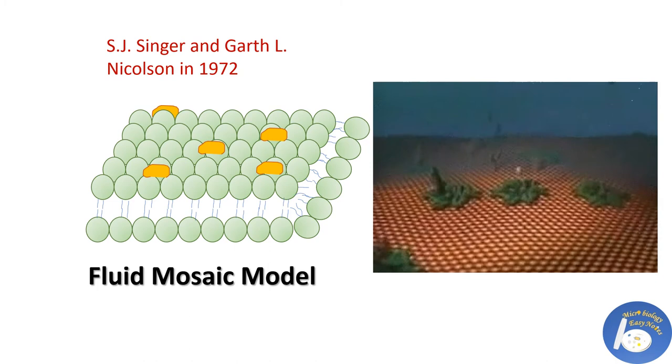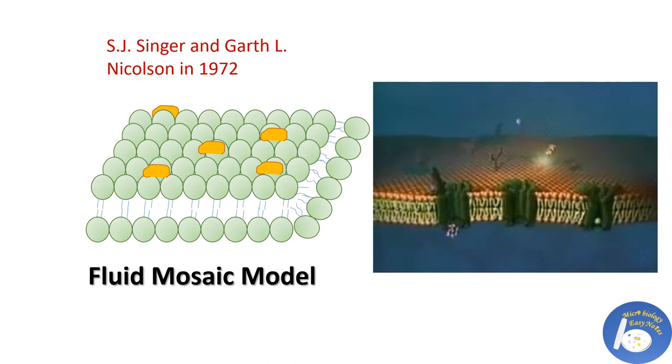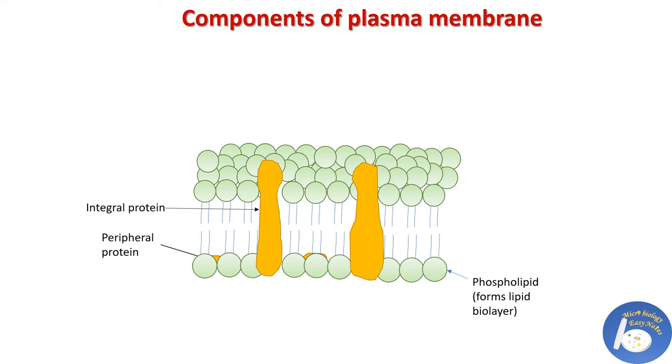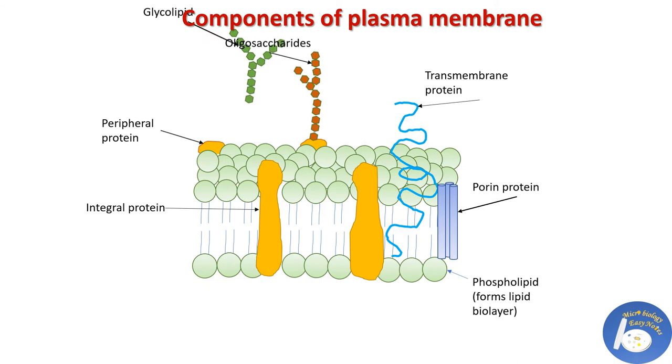These biomolecules are dynamic, moving and sliding past one another within the plane of the membrane. It looks like a fluid-like mosaic, thus called fluid mosaic model. Different biomolecules which form plasma membrane are phospholipids, integral proteins, peripheral proteins, transmembrane proteins, porin proteins, oligosaccharides and glycolipids.